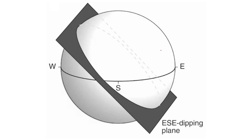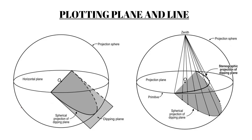Now we will understand how we project these features. You can see an east-southeast dipping plane intersecting this hollow sphere. The part of the plane that is inside the sphere is this circular part. Even if the plane inside the sphere is circular, it is a plane with the same attitude as the full square plane, so it will very well serve the purpose.